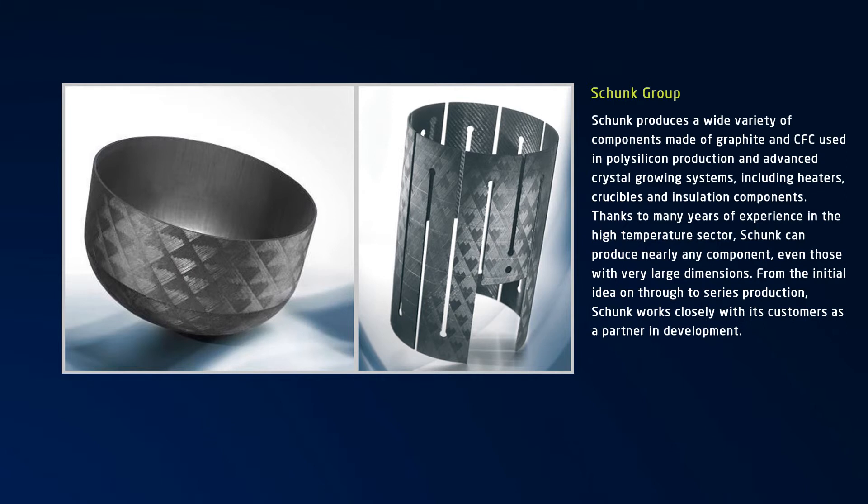Schunk produces highly precise and pure components made of graphite and CFC used in polysilicon production and advanced crystal growing systems. These include heaters, crucibles, and insulation components, for example. The company has many years of experience in the high-temperature sector and is able to customize the components exactly with respect to customer requirements.